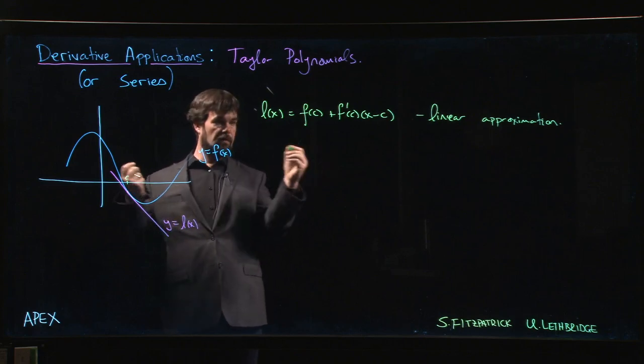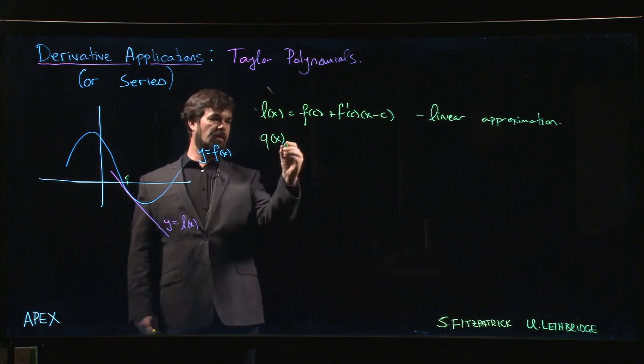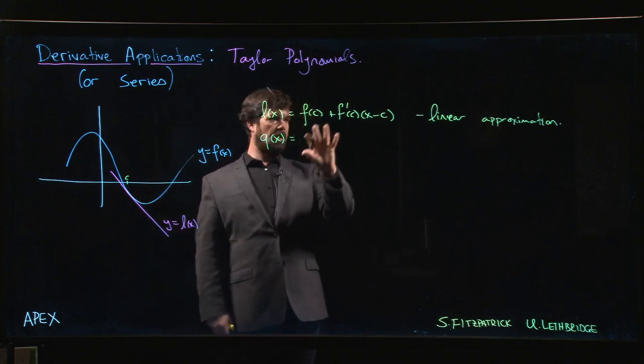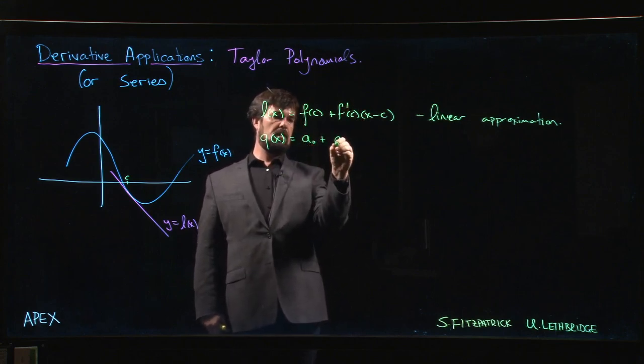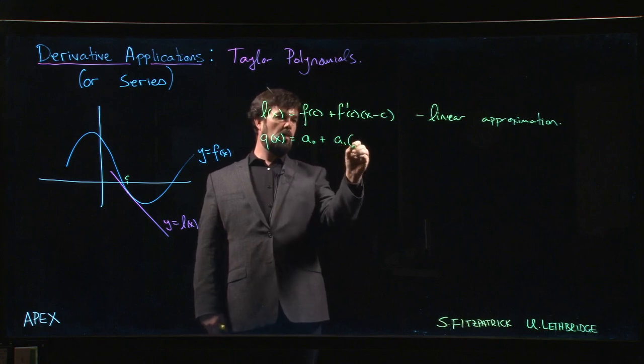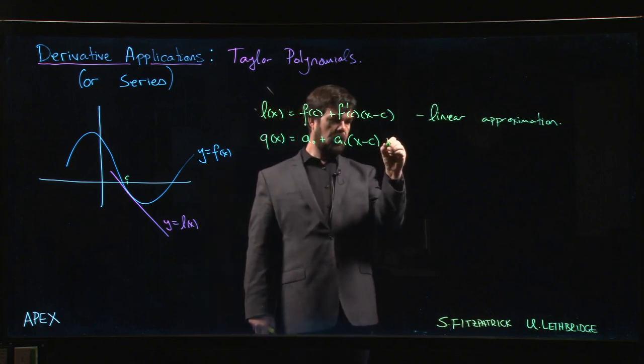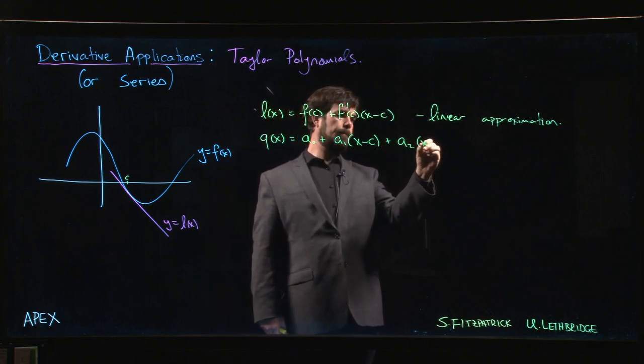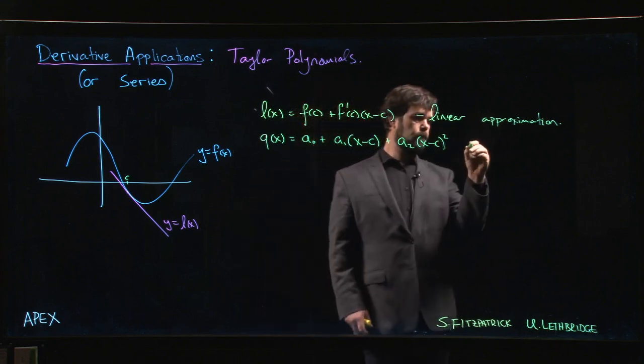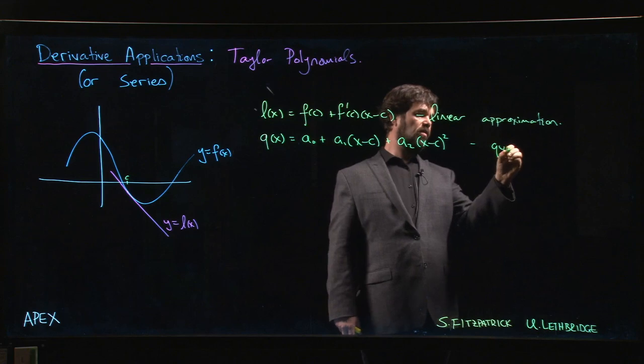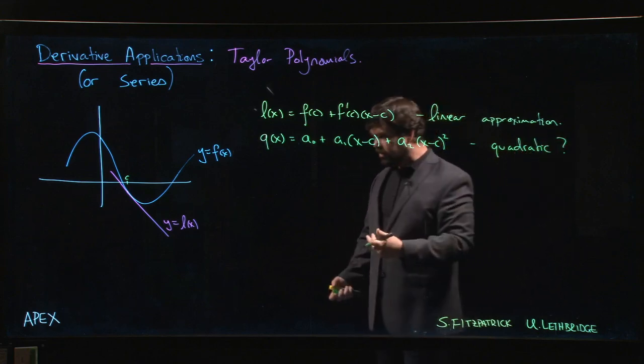Could we do something like q(x) equals—maybe the coefficients are going to look different, but maybe there's an a₀ term, a₁ term, we'll work in powers of (x - c), you'll see that's going to be convenient, and maybe now we go to a second order term. So we say, okay, is there such a thing as a quadratic approximation? Can we do that? Does that even make sense?